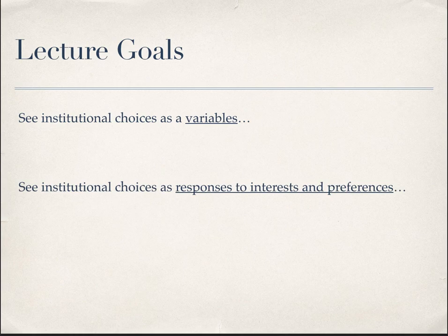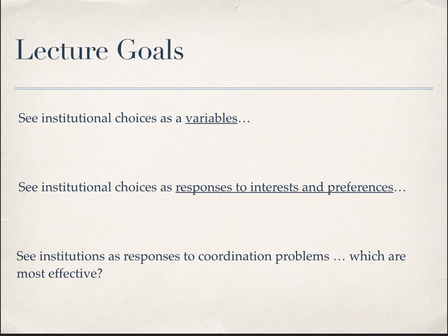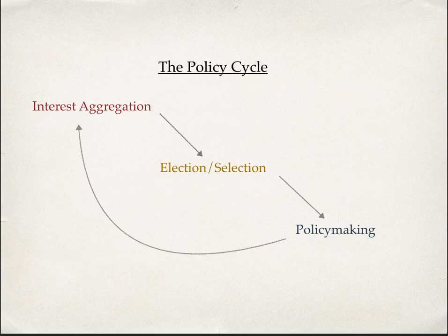We also want to think about institutional choices as an independent variable — how does it change policy outcomes if we shift from a prime minister to a president, or increase freedom of speech, assembly, or religion? In addition, we should look at how institutional choices are responses to interests or preferences, and whether institutions like proportional representation, presidential versus parliamentary systems, or constrained versus extreme media freedom are best practices for solving certain market coordination failures.